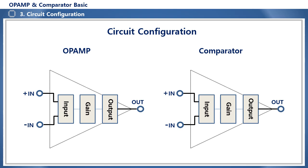Let's learn about the internal circuit configuration of op-amps and comparators. It is generally composed of three stages: an input stage, a gain stage, and an output stage. The input stage consists of a differential amplifier stage, which amplifies the voltage difference between the two input terminals. When there is no potential difference between the two input terminals and a signal of the same polarity is input, it is not amplified because there is no difference between the two input signals.